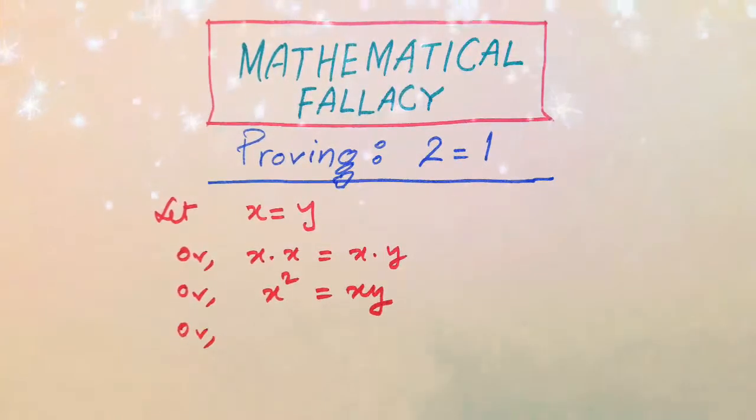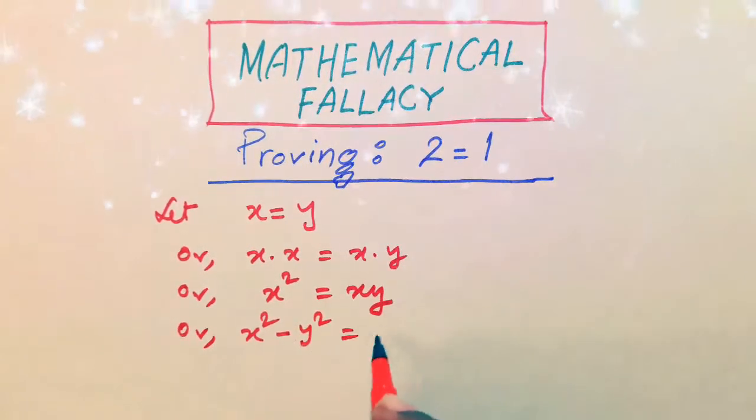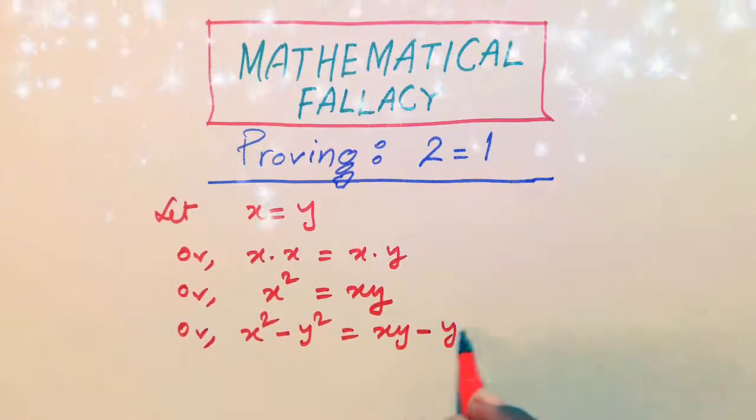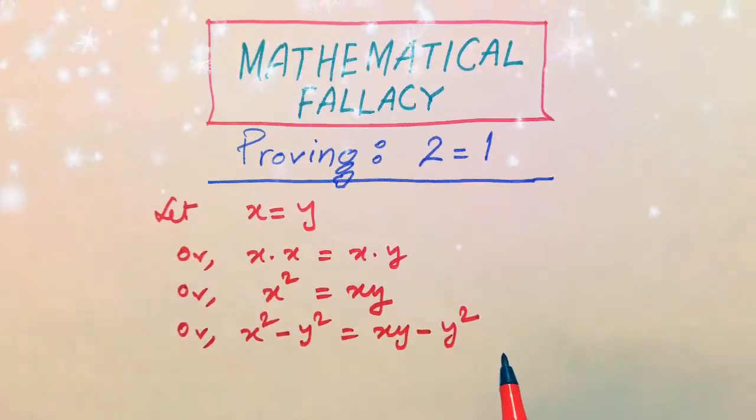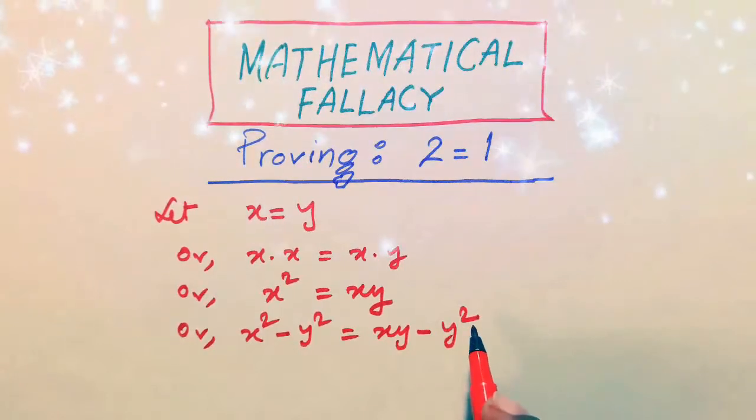So subtracting from both sides y square, x square minus y square is equal to xy minus y square. According to Euclid's third axiom, if equals be subtracted from equals, the remains are equal.